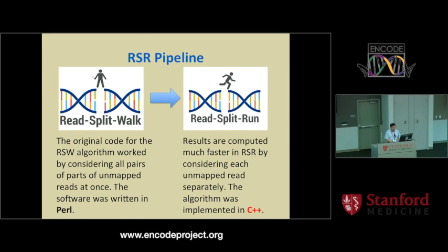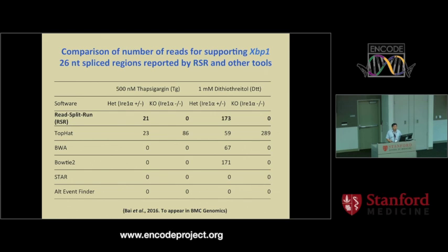Lots of tools have been developed to study alternative splicing. We developed a tool called RitzSplig, and the current version is called RitzSplig Run. This is a software pipeline that can identify novel splicing junctions at the genome-wide level. We compared our tool to typical splicing junction detection tools like TopHat, STAR, and others, and our tool outperformed them in identifying special types of splicing mechanisms in both accuracy and running time.